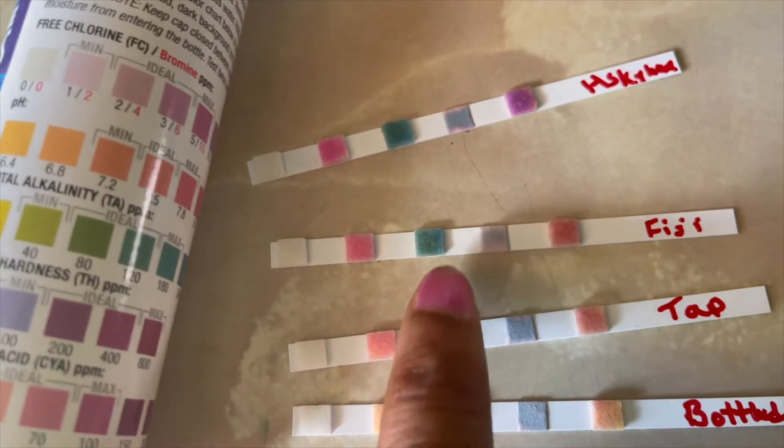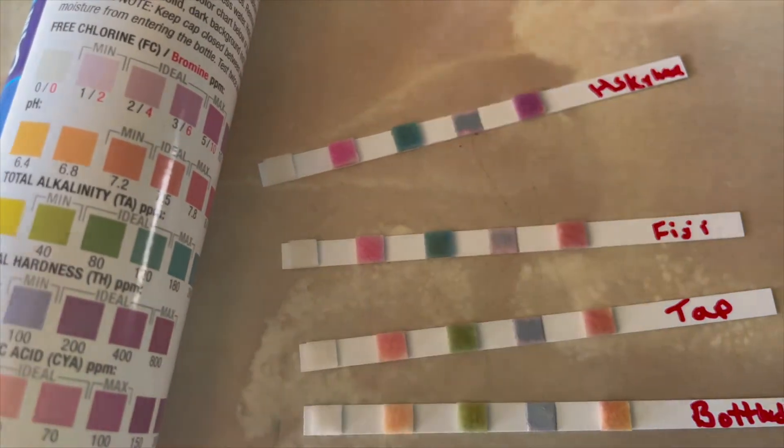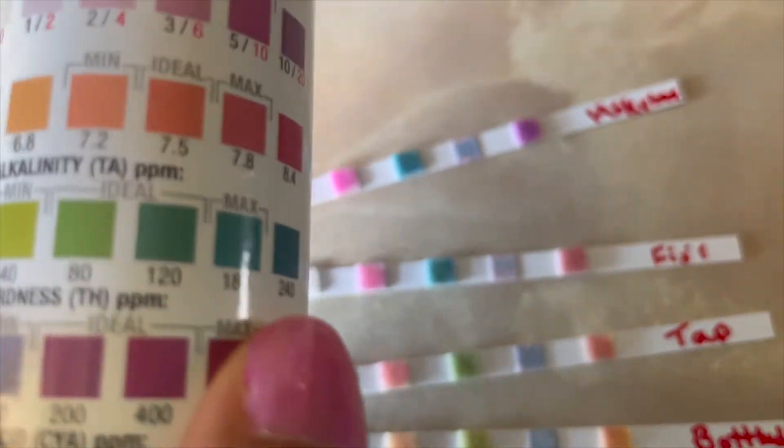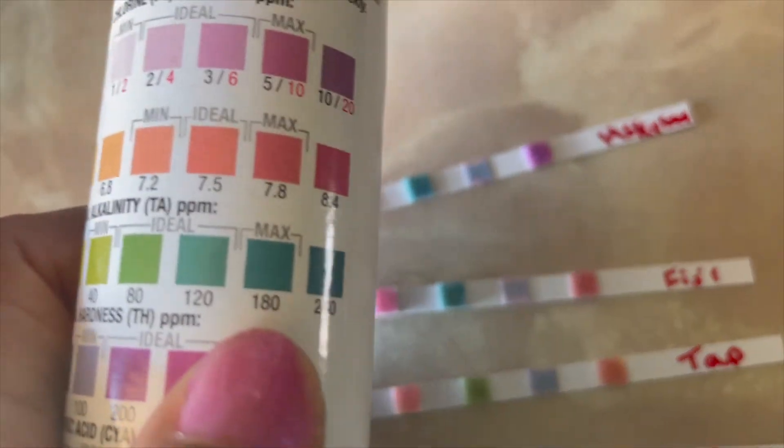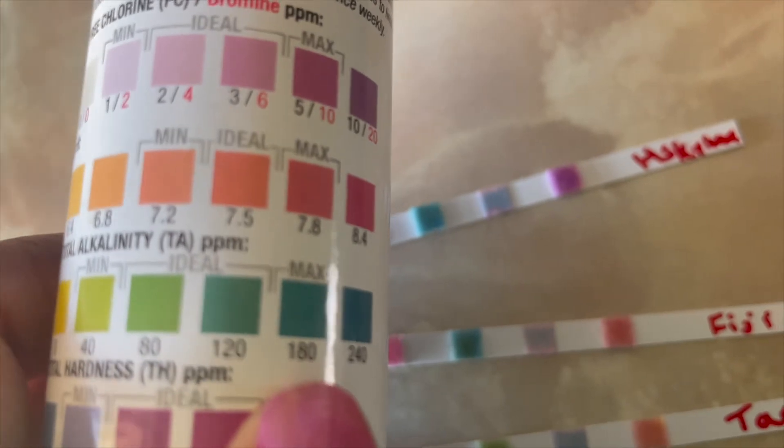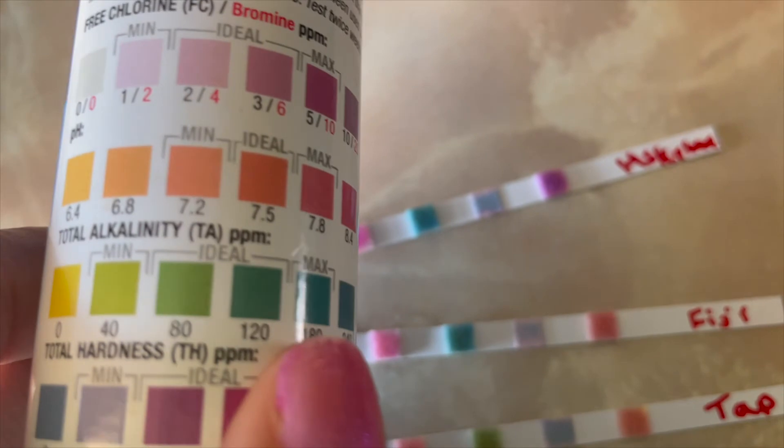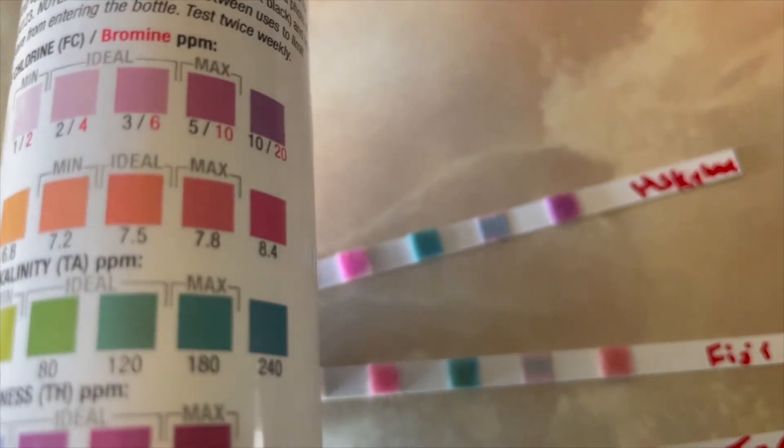So now let's take a look at the alkalinity of the water. Once again you can see that the Skyam and the Fiji are pretty close, around 180 to 240. And then if you come down you see that the tap water is around 80 I believe.